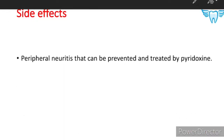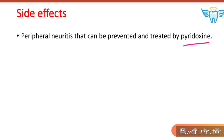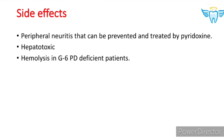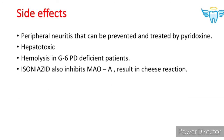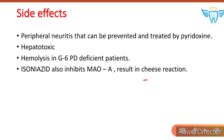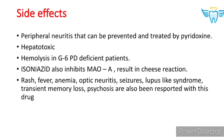Side effects of isoniazid include: peripheral neuritis, which can be prevented and treated by pyridoxine (vitamin B6); hepatotoxicity; hemolysis in G6PD-deficient patients. Isoniazid also inhibits monoamine oxidase enzymes, resulting in cheese reaction. Rash, fever, anemia, optic neuritis, seizures, lupus-like syndrome, transient memory loss, and psychosis have also been reported.